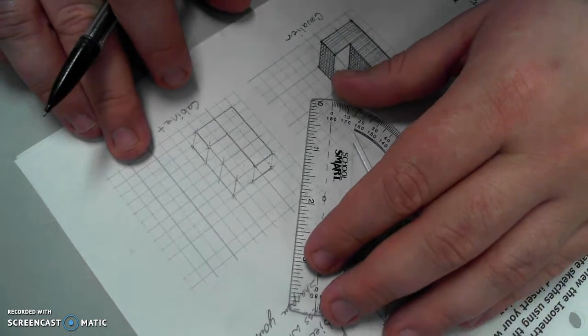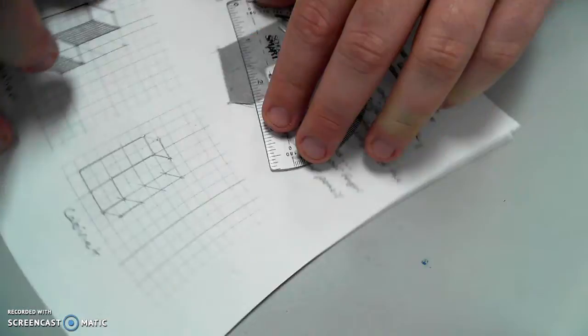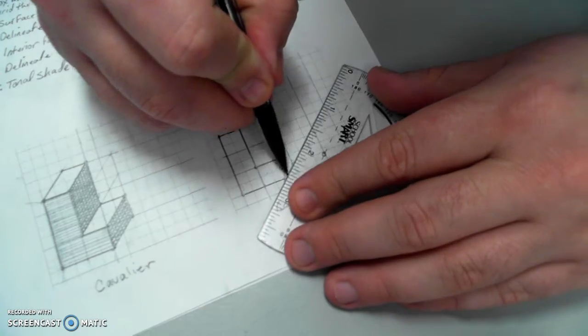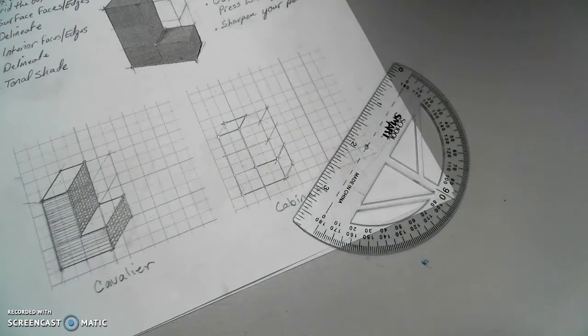And then, now my depth lines. It'll be easier for you to see if I rotate it this way. Those give me my surface faces.